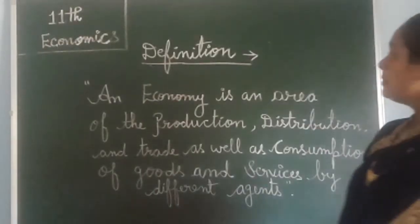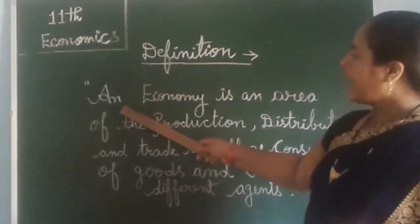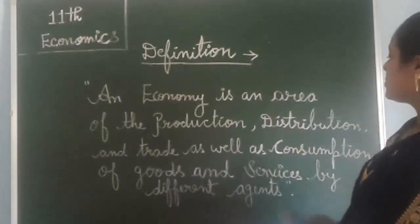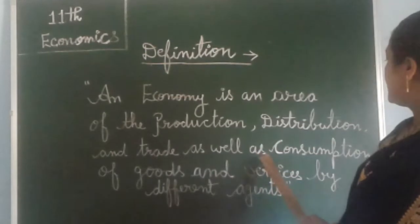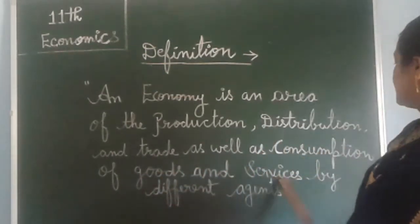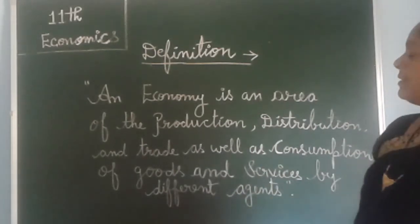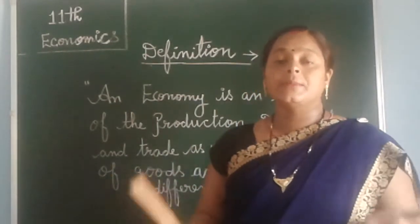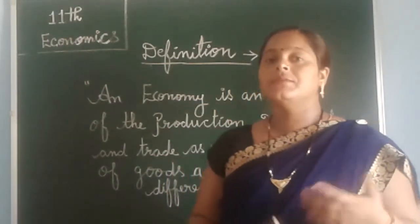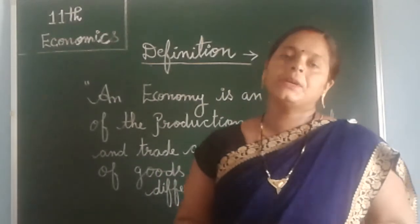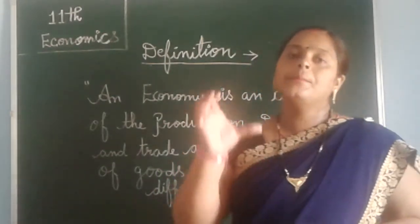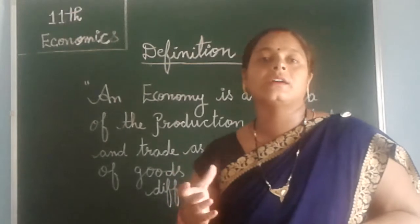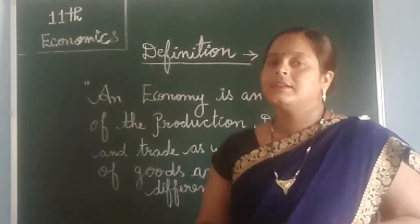So the definition of economics: an economy is an area of the production, distribution and trade as well as consumption of goods and services by different agents. This means how peoples earn, how it is distributed among the people, and after that how they will consume it — by different agents. And by knowing the economy of any country we will know what is the condition of people of that place and country.